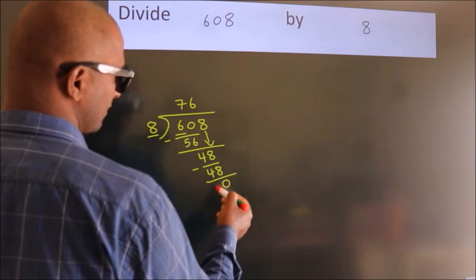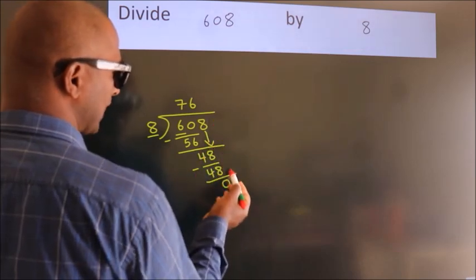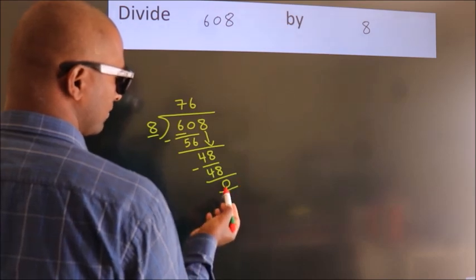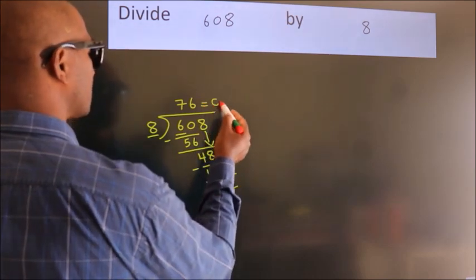After this, no more numbers to bring down. And we got remainder 0. So this is our quotient.